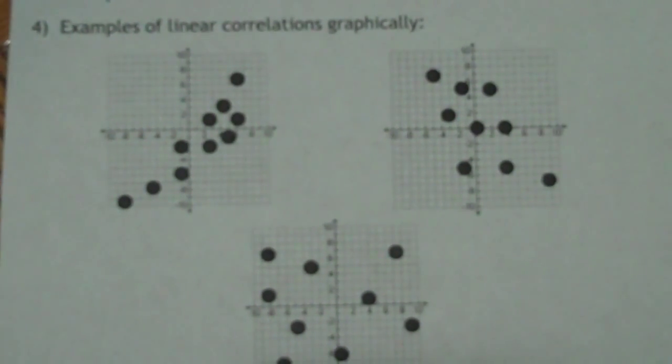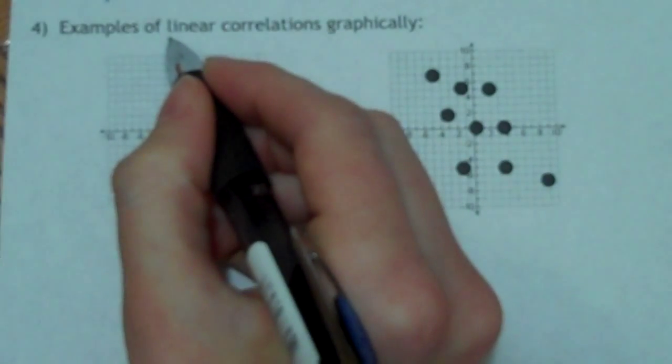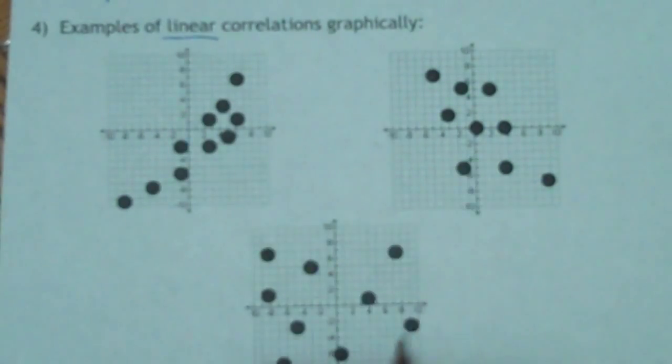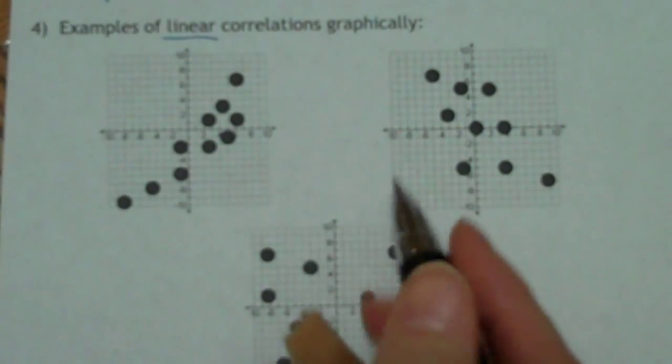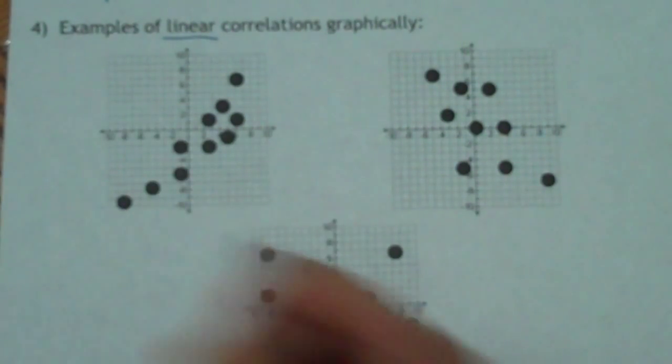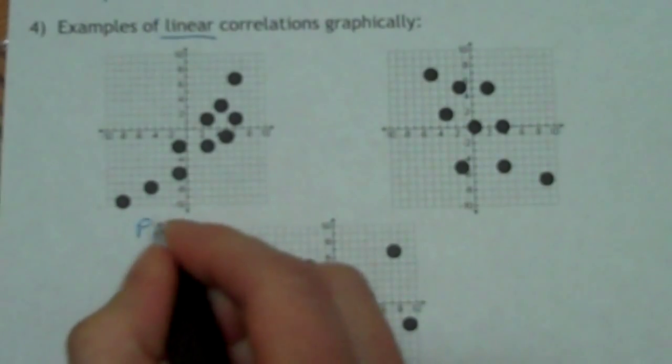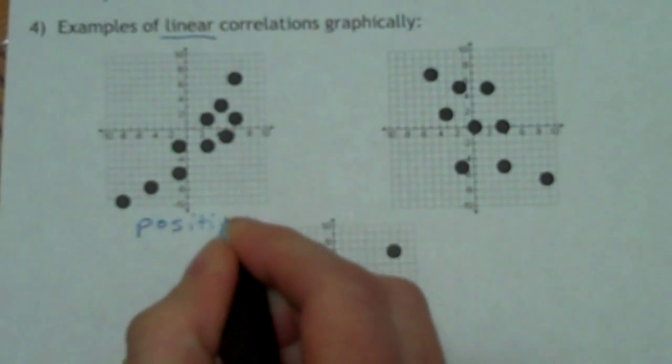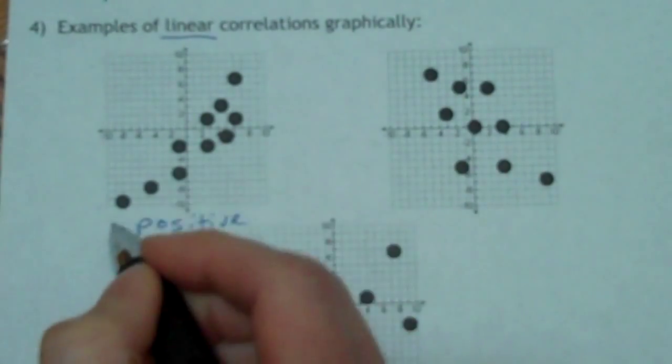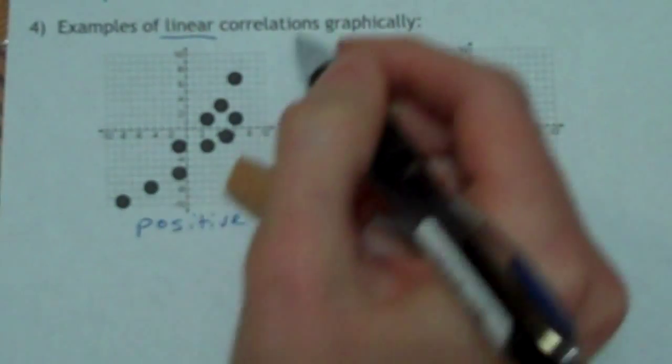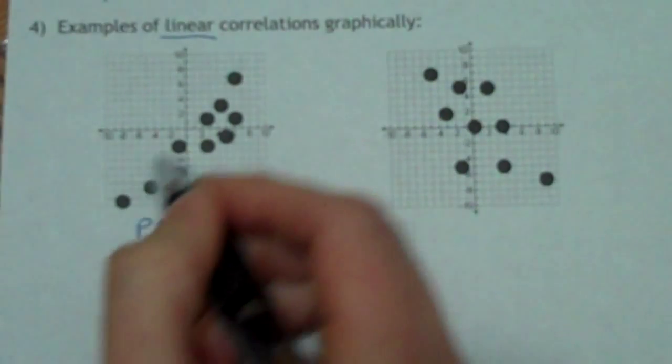So we have three different types of correlations that we're going to talk about. Notice the word linear, these are all linear correlations, meaning that they all kind of form a line. So the first kind is a positive correlation. Because if you look at all the dots on the graph, they kind of go in the positive direction. It looks like they have a positive slope. They're all going up.